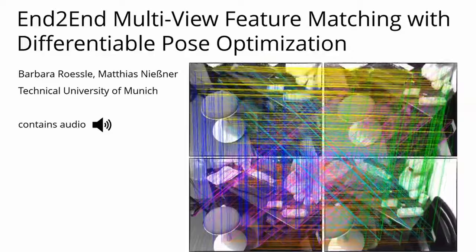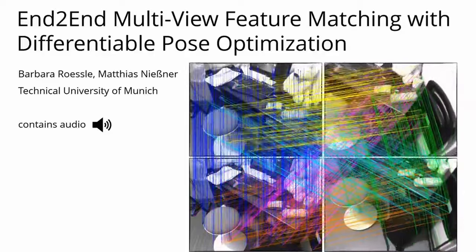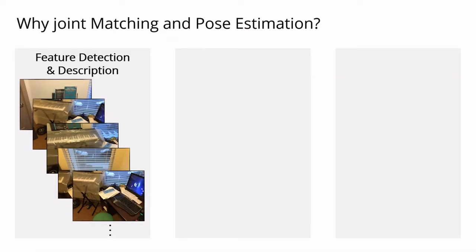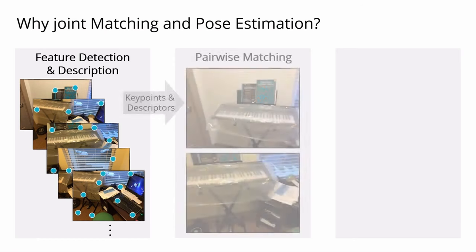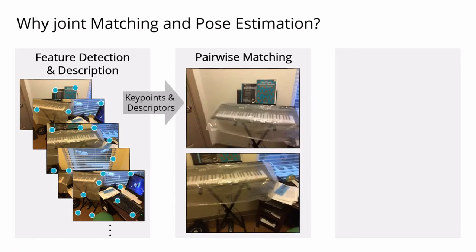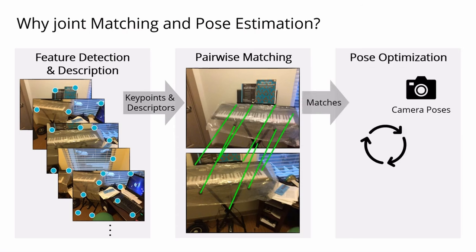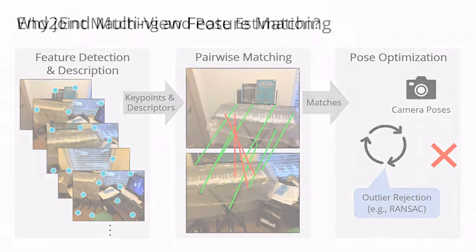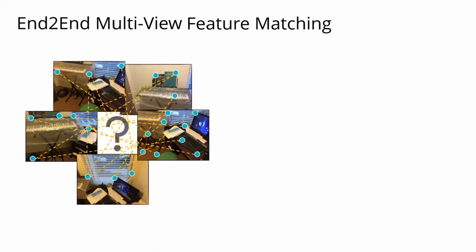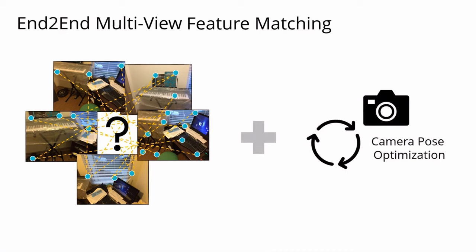We present end-to-end multi-view feature matching using differentiable pose optimization. Conventional pose estimation performs a sequence of isolated steps: local feature descriptors are computed, matched across image pairs, and the resulting correspondences serve as constraints for pose optimization. However, erroneous matches have severe impact on the optimization and often require additional measures for outlier rejection. Our idea is to address this problem earlier on by improving the matching. To this end, we jointly match across multiple views to support correspondence reasoning, and learn feature matching end-to-end with pose optimization so that the matching network learns the needs of pose estimation.